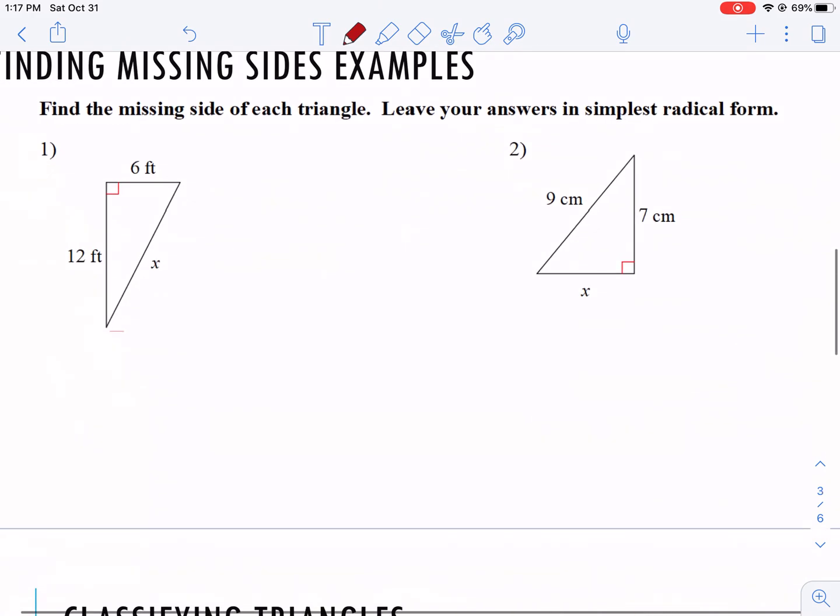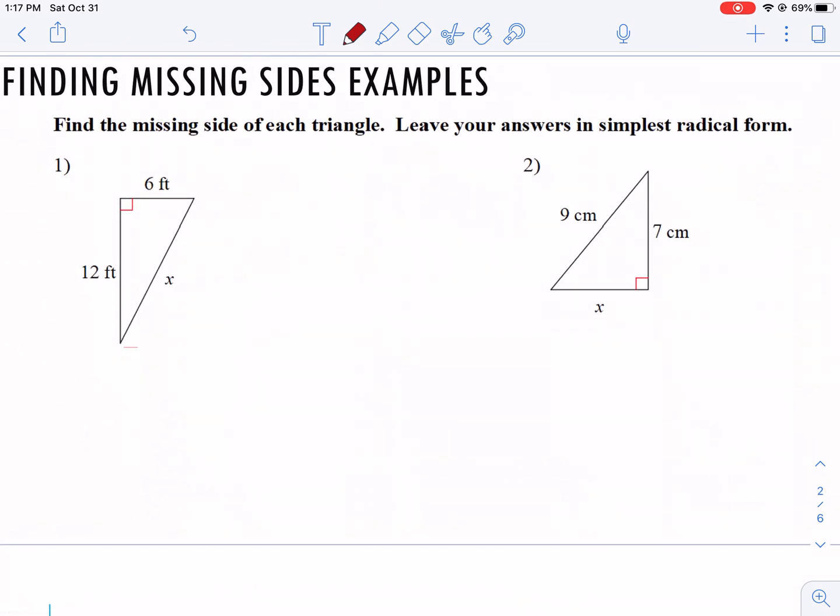For the first two examples here, we're going to talk about how we can use the Pythagorean Theorem to find missing sides. We're going to leave our answers as simplest radicals. If I look here, I see that x is the hypotenuse. So if I'm plugging my information into my Pythagorean Theorem, it's going to be 6 squared plus 12 squared. It doesn't matter which one's which for a and b.